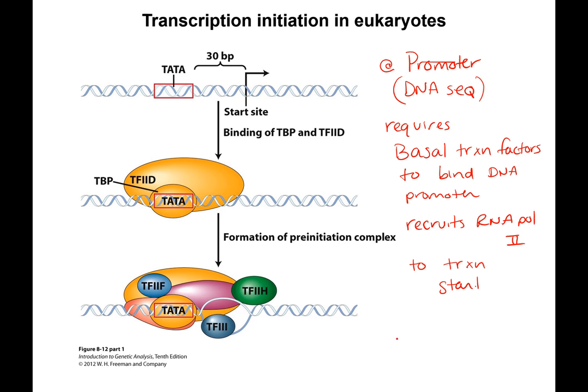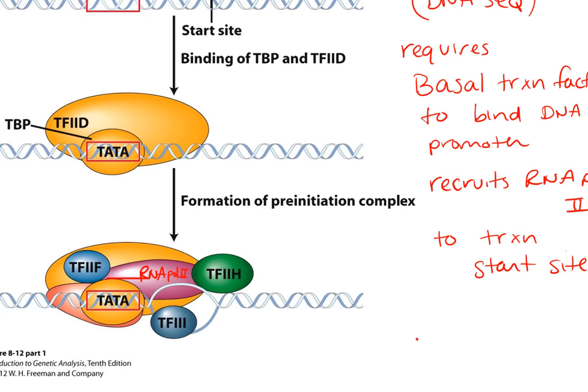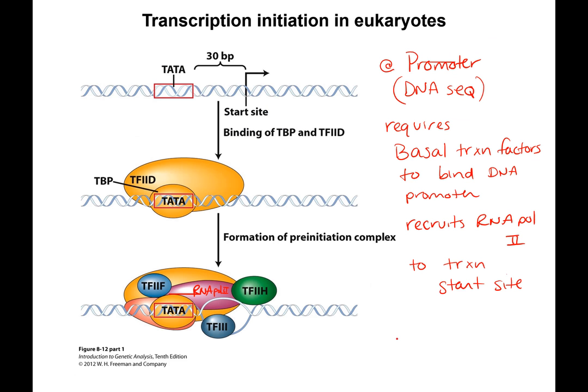These proteins align — in pink is your RNA polymerase — these transcription factors align the RNA polymerase right to where the plus one site is going to be, so that RNA polymerase can start copying. Remember that RNA polymerase does not require a primer; it can just start copying at whatever the first nucleotide is in its catalytic site.